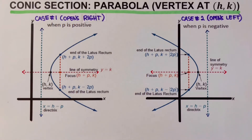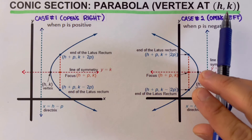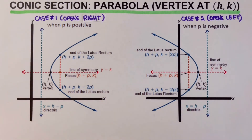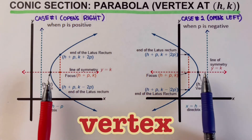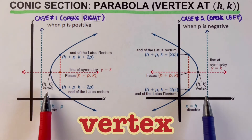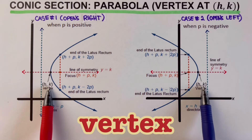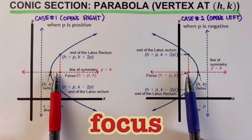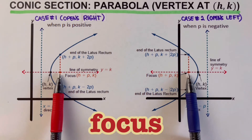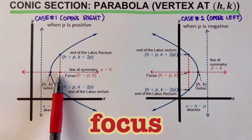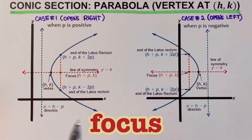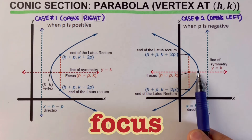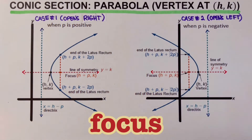There are four cases of a parabola with vertex at hk. Let's review the parts of every parabola. The first part is the vertex, located at coordinate (h, k). Another part is the focus. The location of the focus from the vertex determines where the parabola opens. If the focus is to the right of the vertex, the parabola opens to the right; if to the left, the parabola opens to the left. The distance from the focus to the vertex is represented as p.